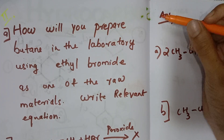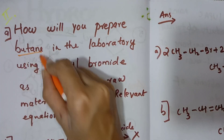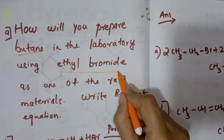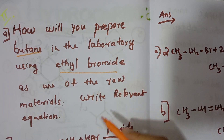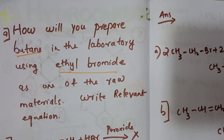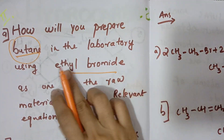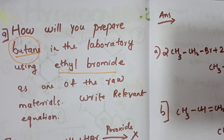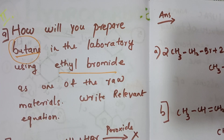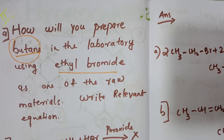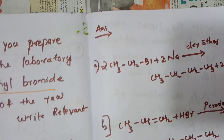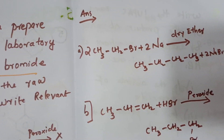How will you prepare butane in the laboratory using ethyl bromide as one of the raw materials? Write the relevant equation. Butane is what we are preparing, and ethyl bromide is the raw material.